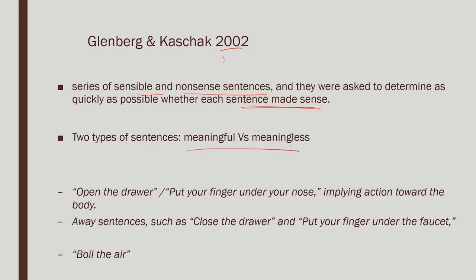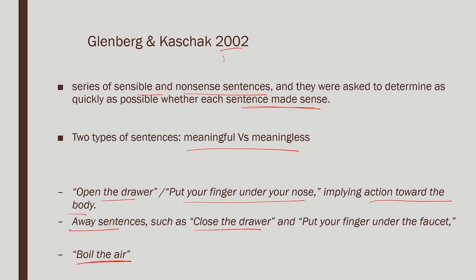The sentences were manipulated in terms of movement direction. 'Toward' sentences included: 'open the drawer,' 'put your finger under your nose' — implying movement of the hand toward the body. 'Away' sentences included: 'close the drawer,' 'put your finger under the faucet' — where the hand moves away from the body. Meaningless sentences like 'boil the air' served as fillers. The clever manipulation was the button press — the response button was manipulated so that in some cases the yes button was near to the participant, in others it was far.